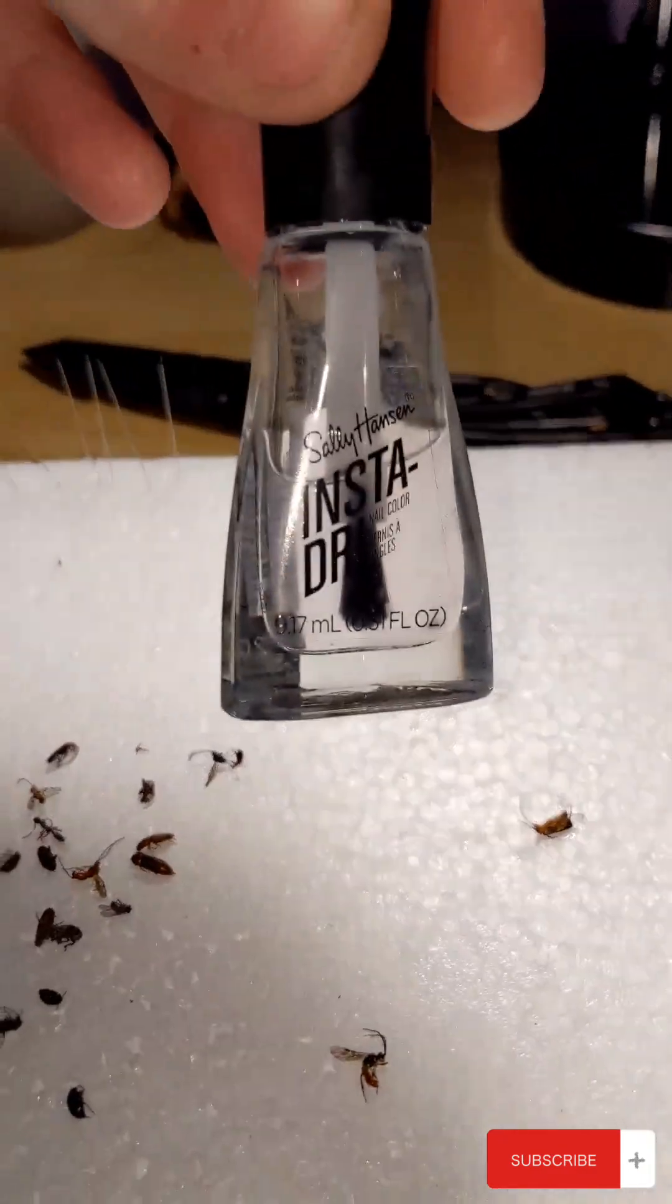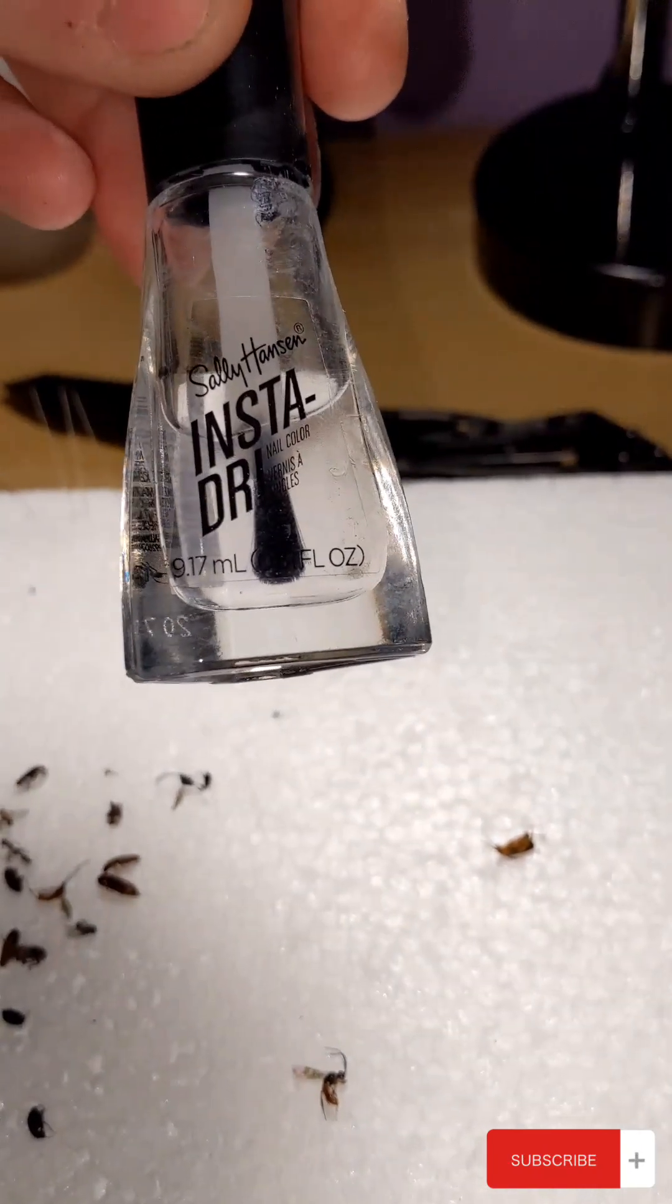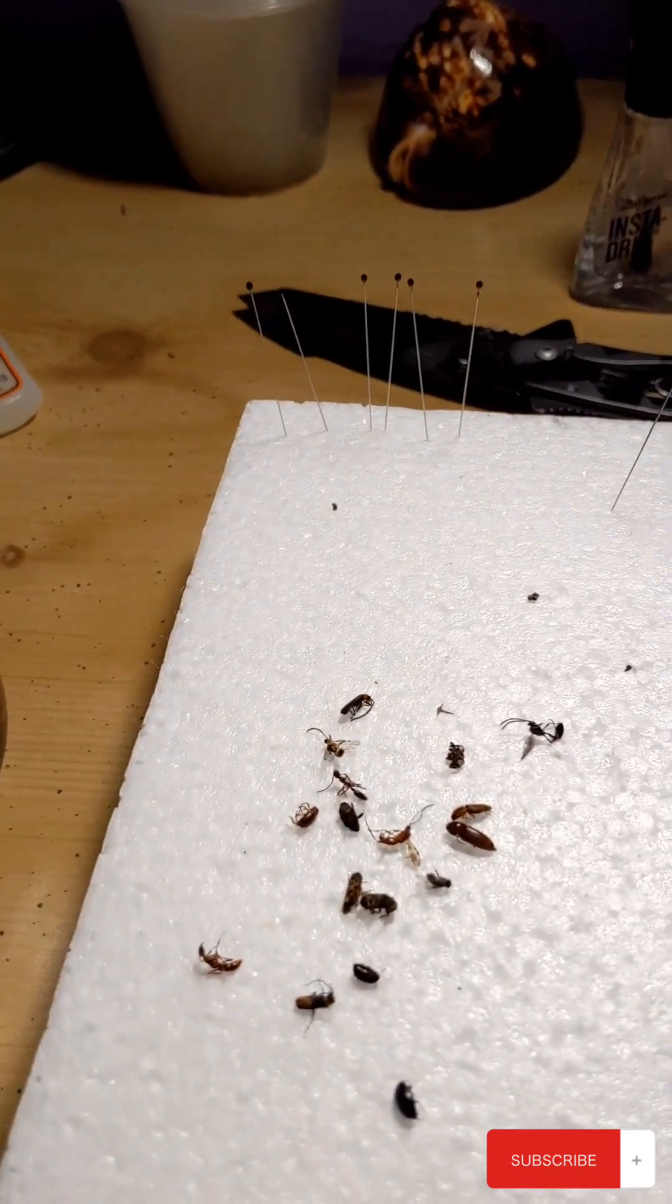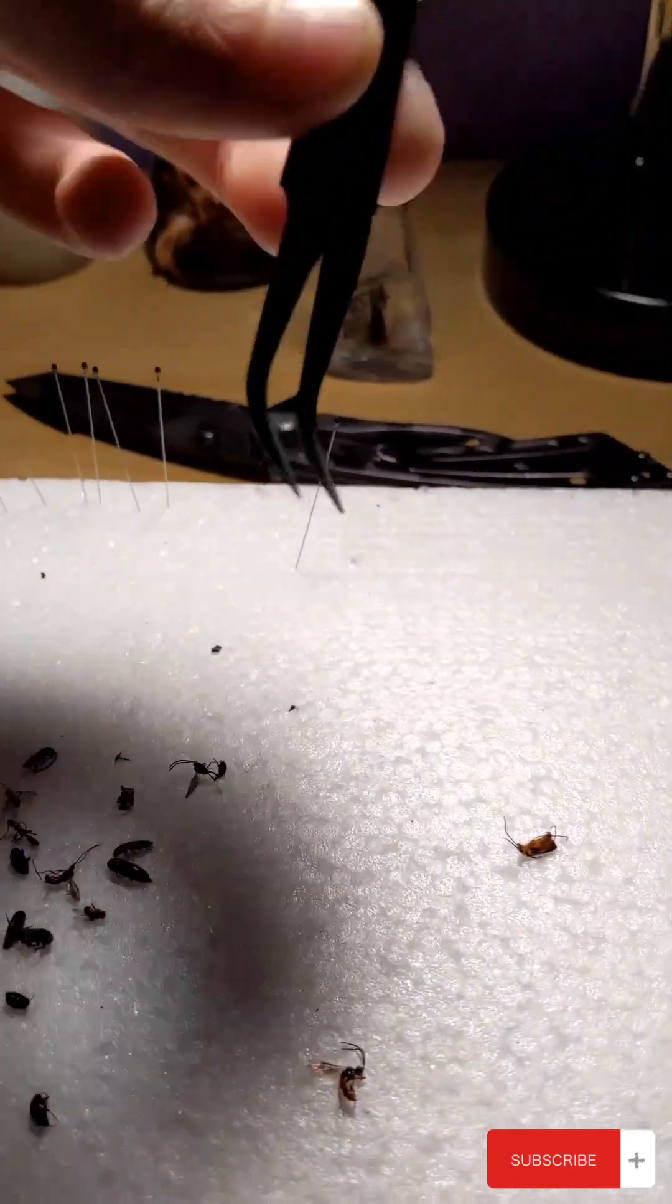You're going to need some glue or, in this case, clear nail polish which is pretty inexpensive. And then your forceps right here.